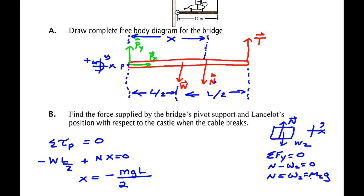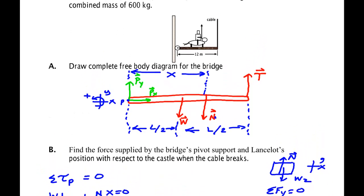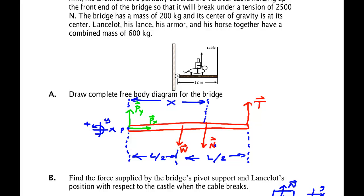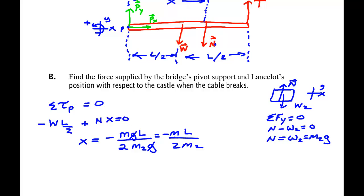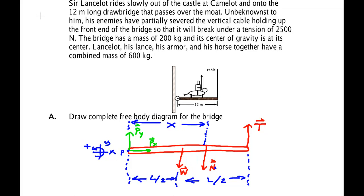This says that x is equal to minus m times g times L over 2. And then I have n, but n is m2g. The g's cancel, and I get minus mL over 2 times the mass of Lancelot. And I have all these numbers. The mass of the bridge is 200 kilograms. The mass of Lancelot is 600 kilograms. So I have minus 200 kilograms, 2 times 600 kilograms. And I need L, the length of the bridge. I was told the length of the bridge. The bridge is 12 meters long.